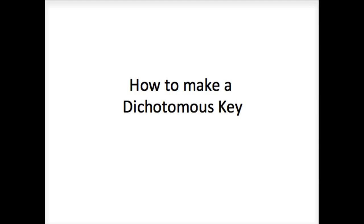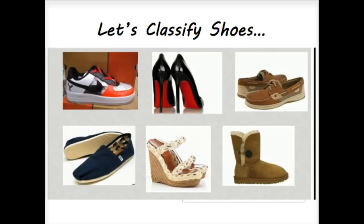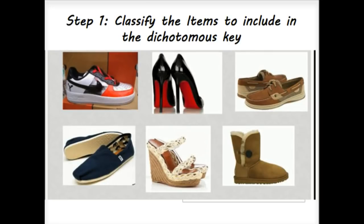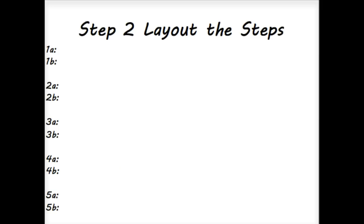The example we'll be looking at today will be six different types of shoes. So step one, first we have to look at these six shoes and observe their similarities and differences. In step two, we need to lay out the steps. Because we have six items, we're going to have five steps, and each step is broken into two parts.